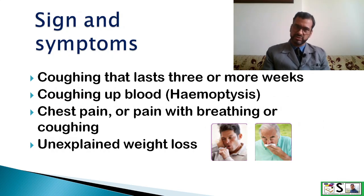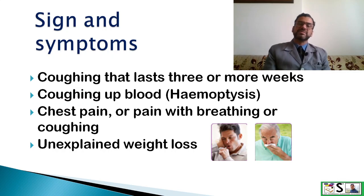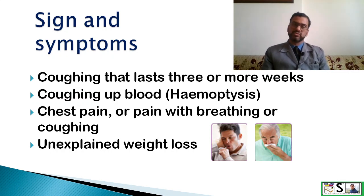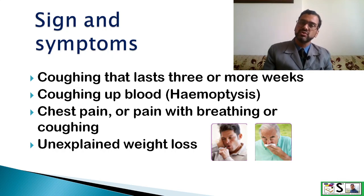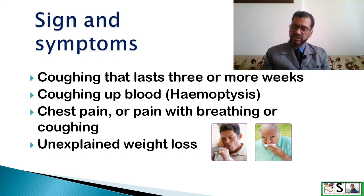What are the signs and symptoms of tuberculosis? How can you identify that a person may be suffering from tuberculosis? The person who coughs — it strikes in our mind that the patient may be suffering from TB. Coughing that lasts 3 or more weeks is a key sign; if the patient has been coughing for 3 or more weeks, they should go for a test. Other major signs include coughing of blood or hemoptysis, chest pain or pain with breathing or coughing, and unexplained weight loss.